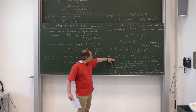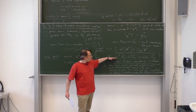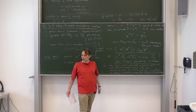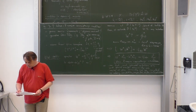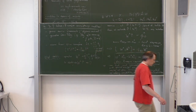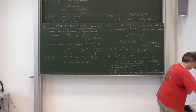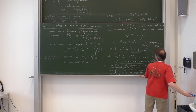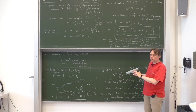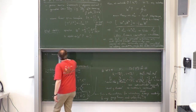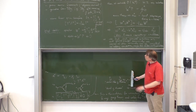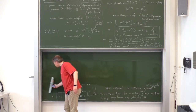Let me stress this again: you can solve this equation once, and the solution does not depend on the loop order N, because at any loop order it would be a classical-like expression. Therefore you have an all-order result. That is very powerful.